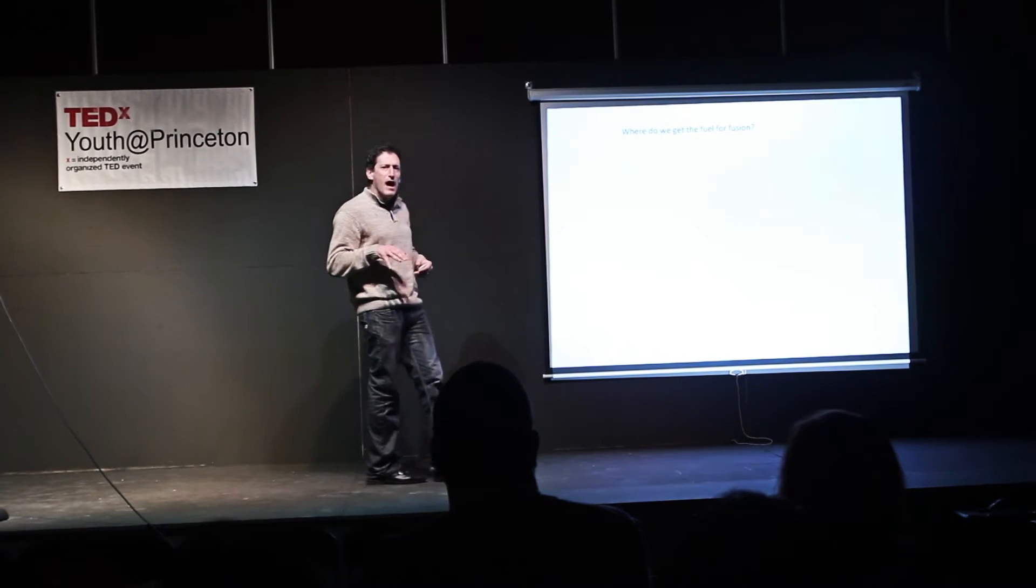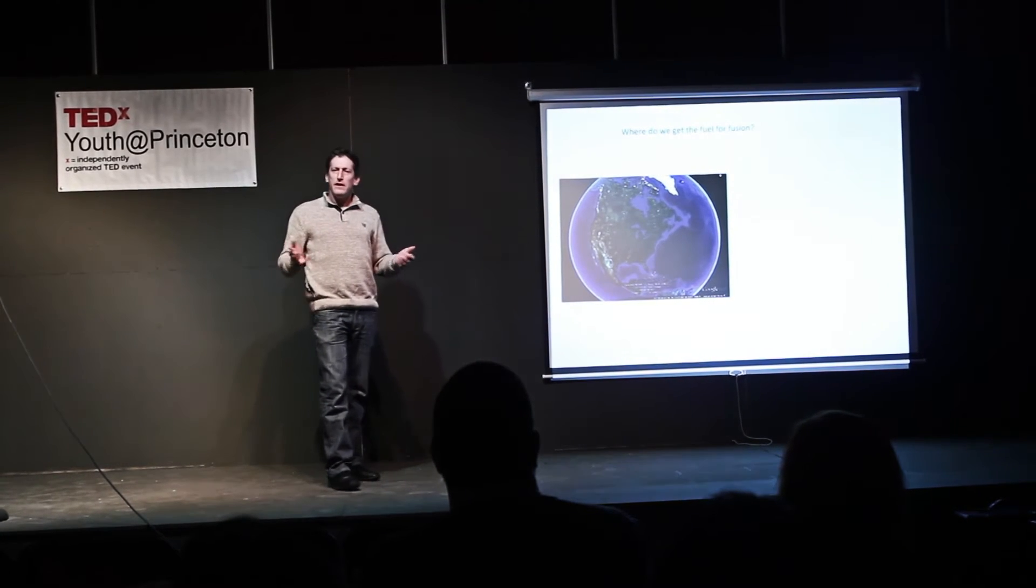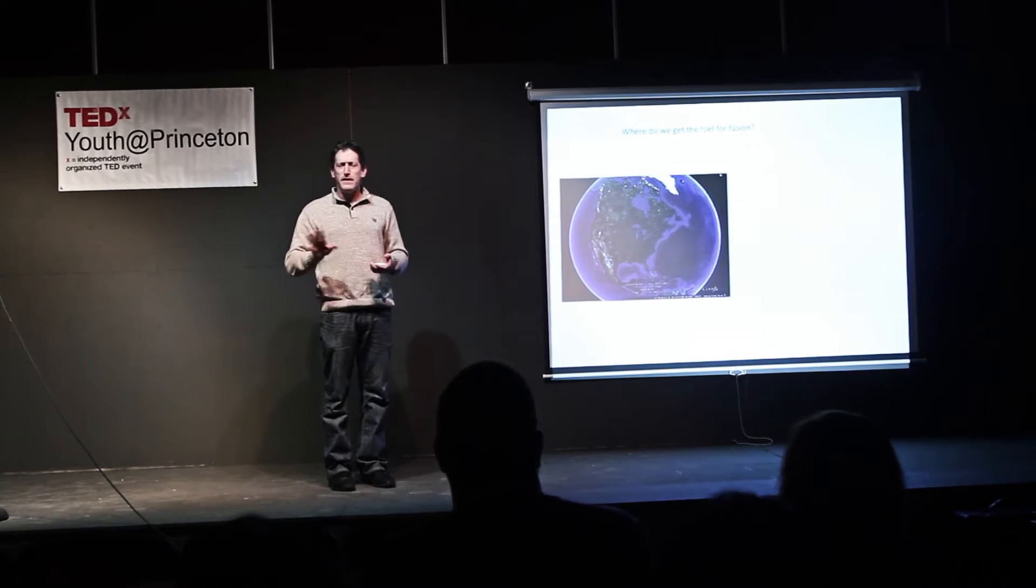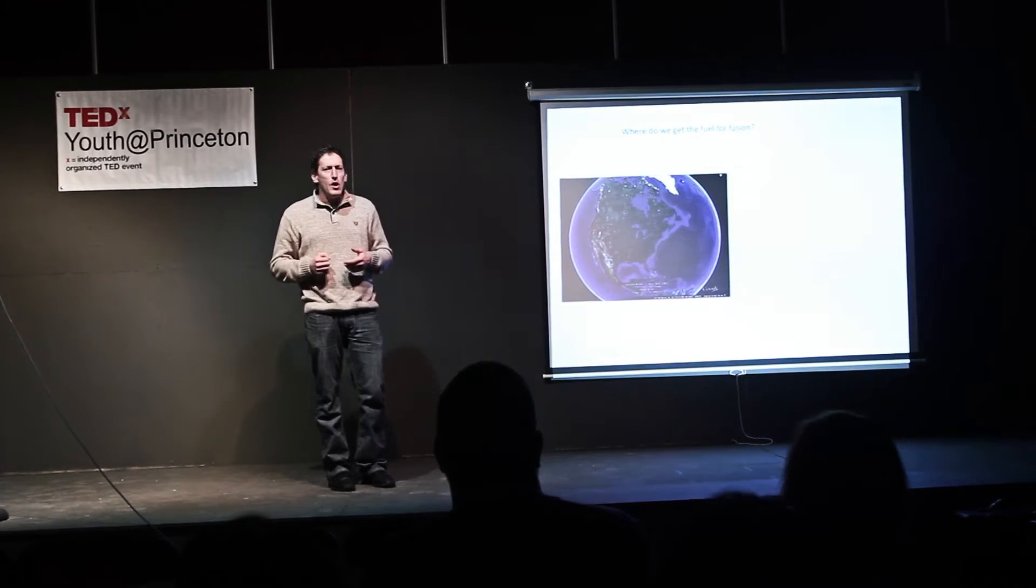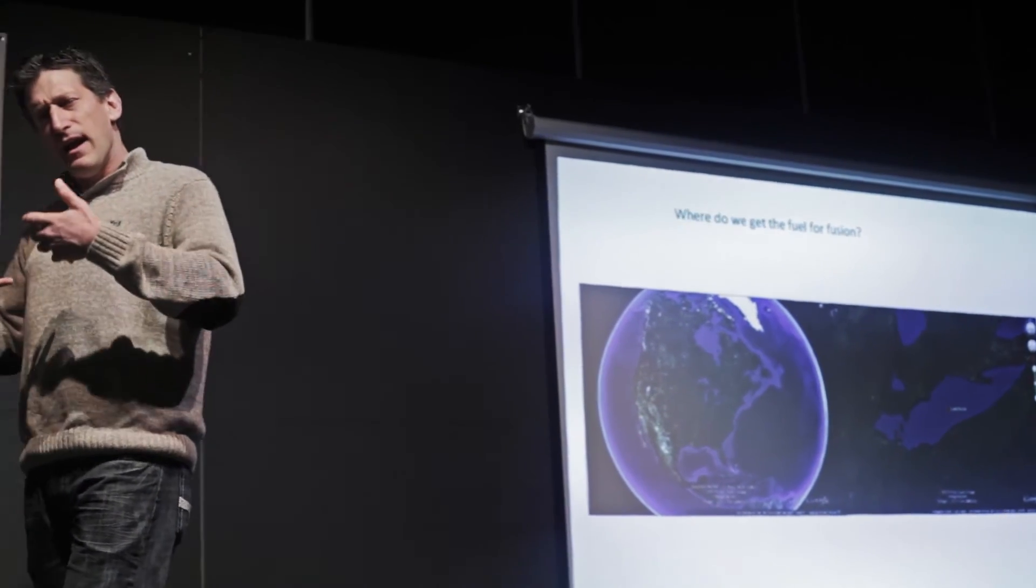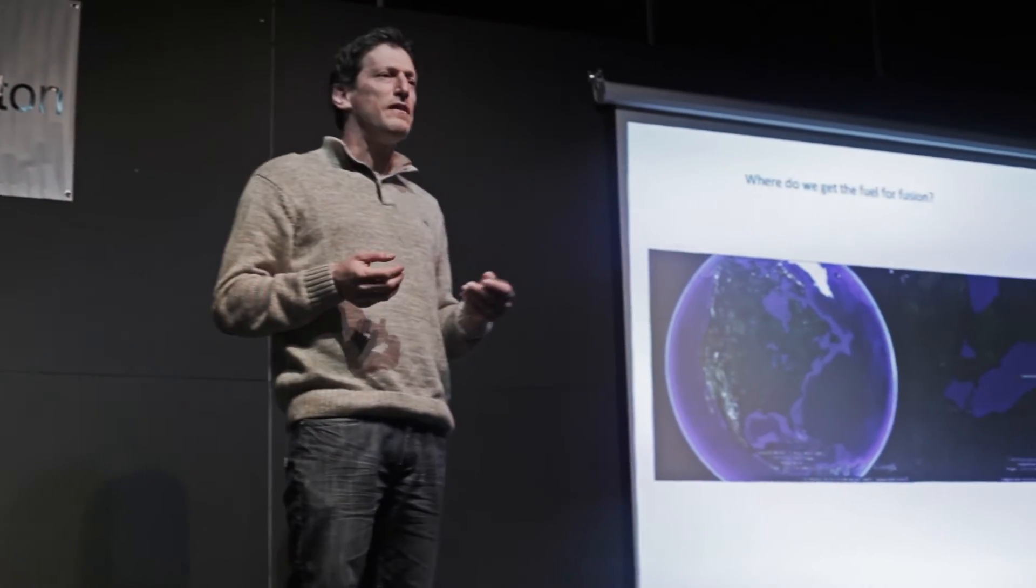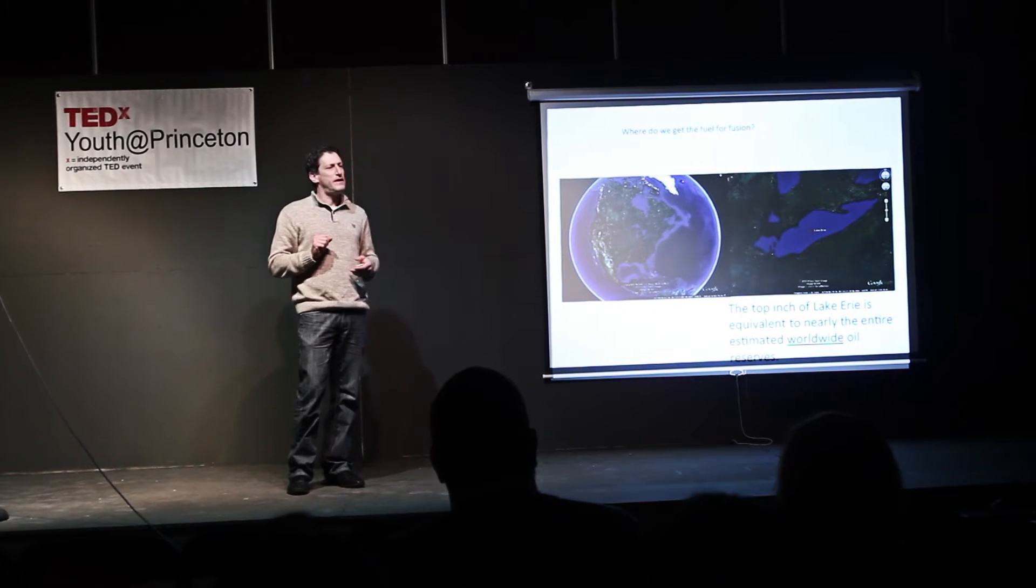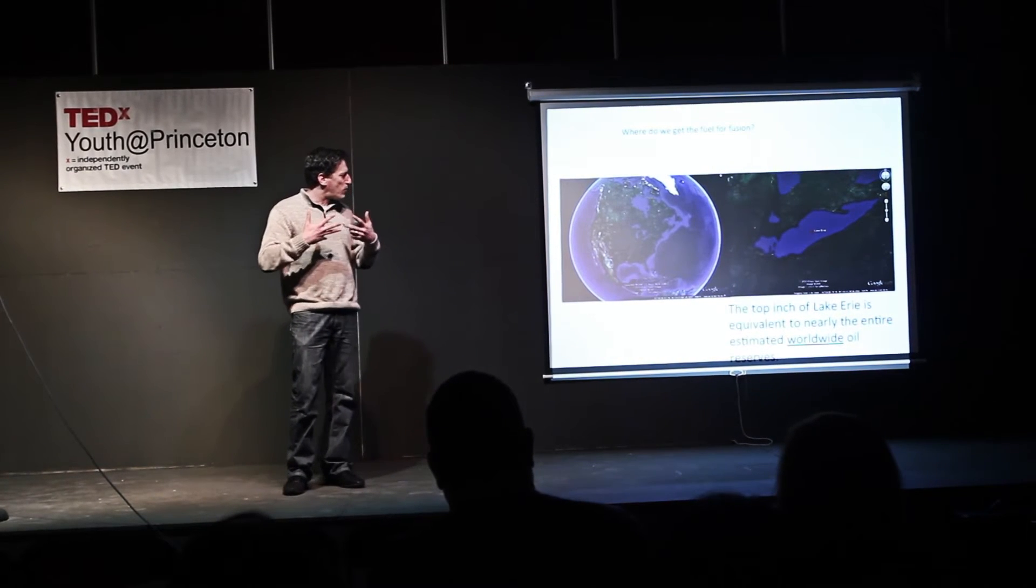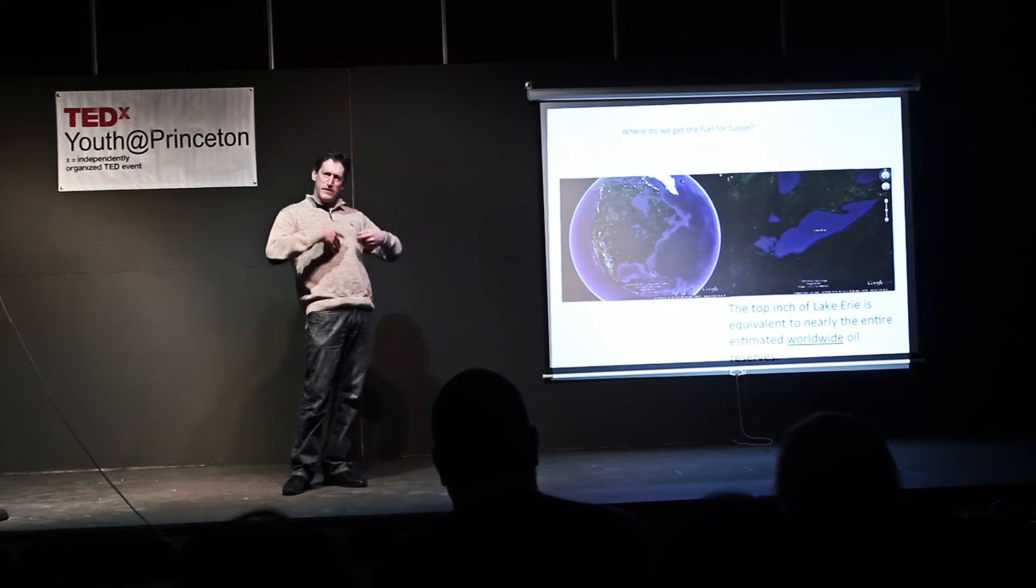So where are we going to get this fuel? Where do we get the hydrogen and deuterium that we need? It's a form of hydrogen, H2O. The Earth is covered in it. And deuterium exists naturally in our seawater. We can extract it very easily. And tritium, the other one that we need to fuse together, we can make in our fusion reactors itself. And to give you an idea of just how powerful and how amazing this energy source is, if you take the top inch of Lake Erie, which is a big lake but it's not as big as our oceans, and if you took that top inch of Lake Erie, extracted the deuterium, put it into our fusion reactor, it's equivalent energy to what we believe is all of our worldwide oil reserves left on the planet. So this is an incredibly, incredibly powerful way to try to make energy, try to make electricity.